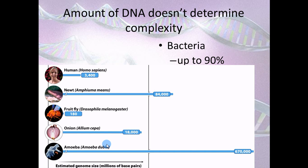Is all of it useful? No — only about five percent of our DNA is actually worth anything. The rest we refer to as junk. When you look at bacteria, about ninety percent of their DNA is worthwhile. We have about three thousand genes that we code for, where something like a newt has about eighty-four thousand genes, and even an amoeba has about six hundred seventy thousand genes. So we have very little coding, but we get a lot done.